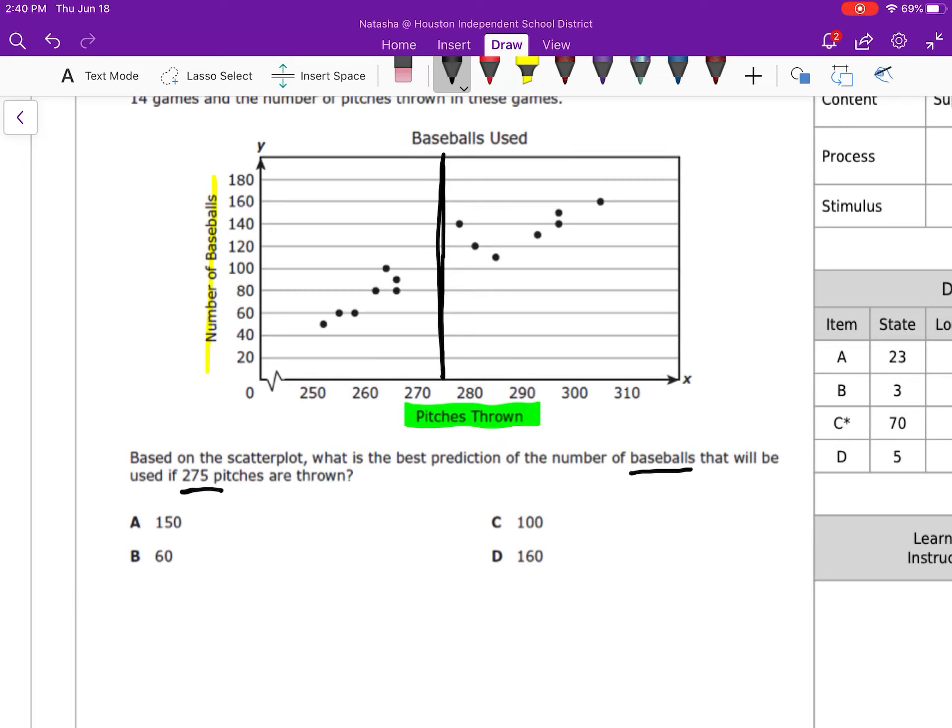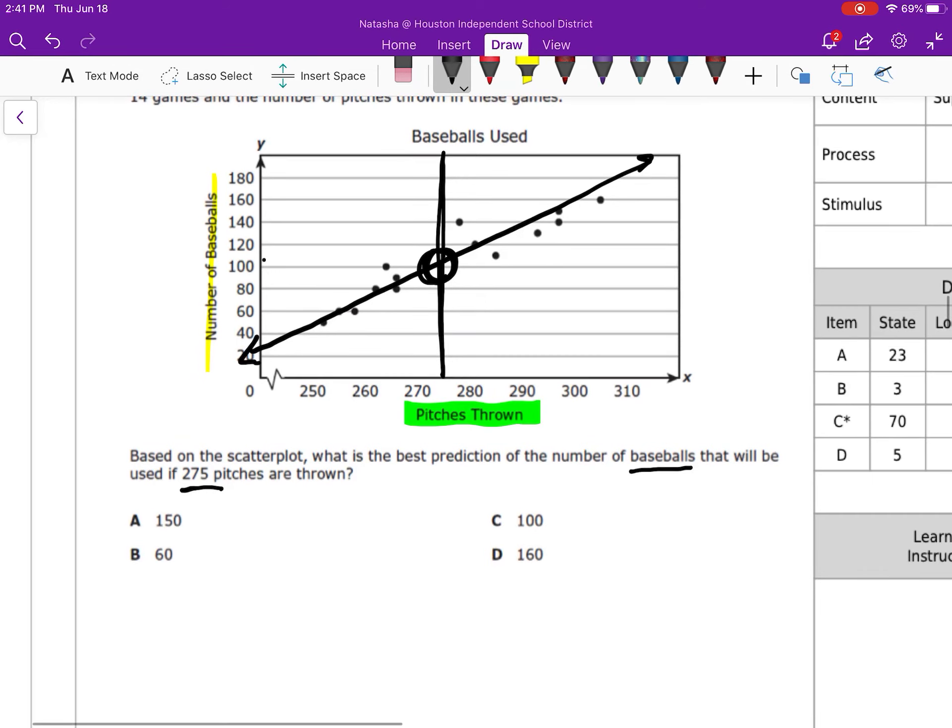Well looking at the trend, if I were to create a trend line going along that's going to meet the most dots on my scatterplot, that's going to be in this region right here, which is 100 baseballs thrown.